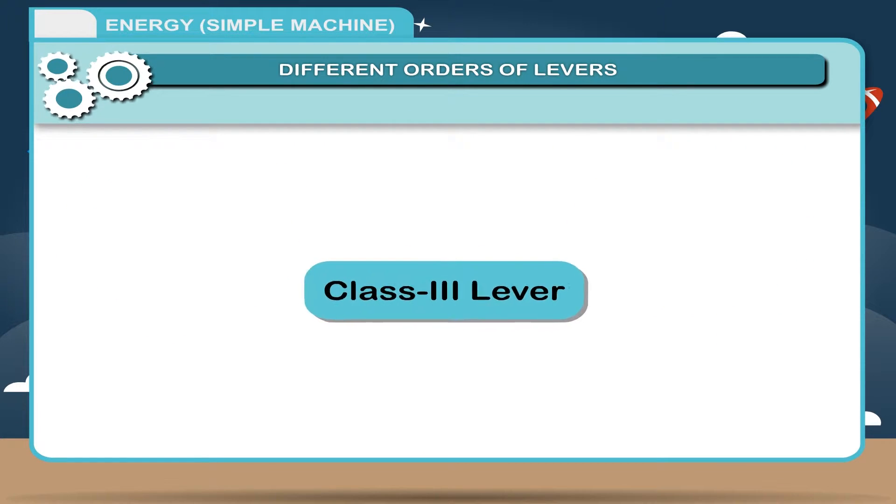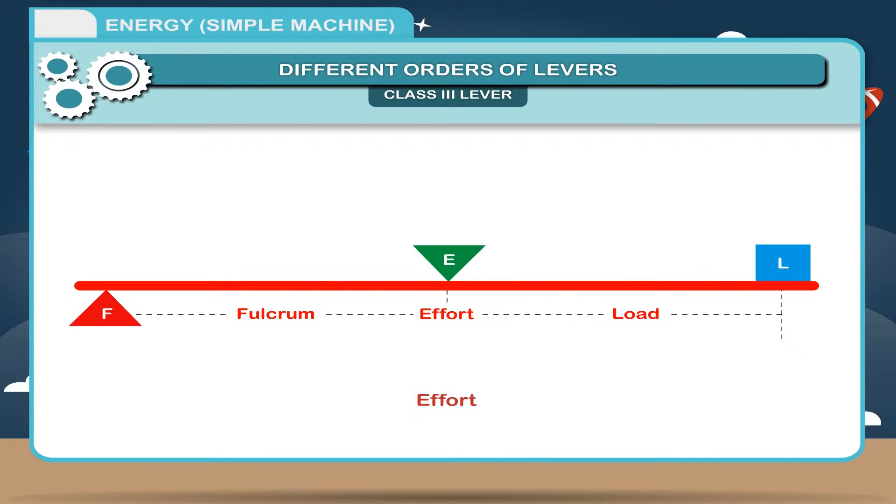Class 3 lever: In this class of lever, the effort E lies between the fulcrum F and the load L.